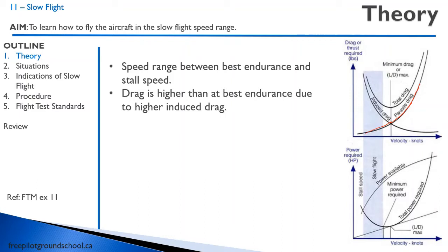We also have induced drag. Induced drag is the drag caused by the lifting surface of the aircraft. It's an inverse function, something like 1 over x with an asymptote of 0. When we add those two curves together, we end up with total drag. There's an area where we have a minimum drag because of this speed.